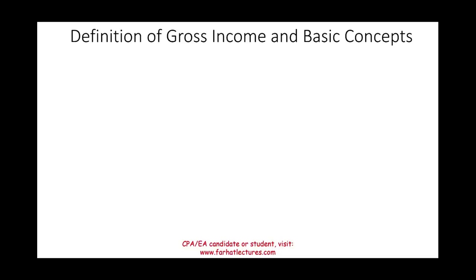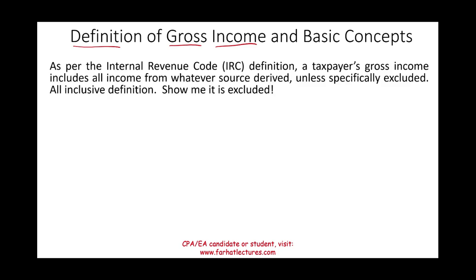Hello and welcome to this session in which we look at the definition of gross income and the basic concepts under the IRC, the Internal Revenue Code. Here's the definition, pretty straightforward: the taxpayer's gross income includes all income from whatever source derived, unless specifically excluded. So what Congress and the IRS are telling us is that everything you receive is income unless they tell you it's not.